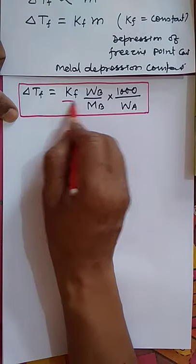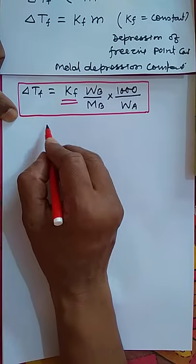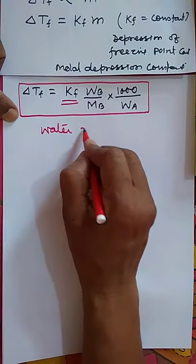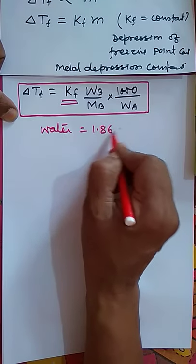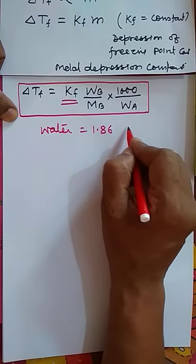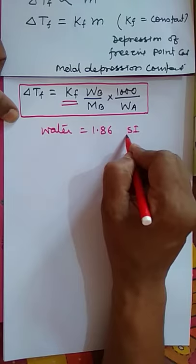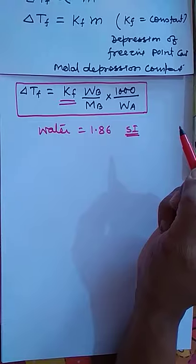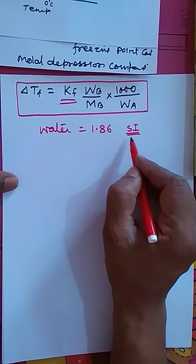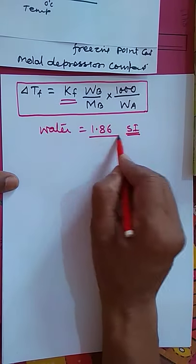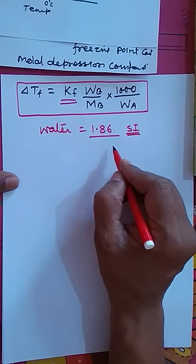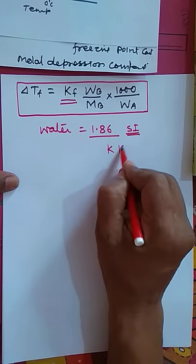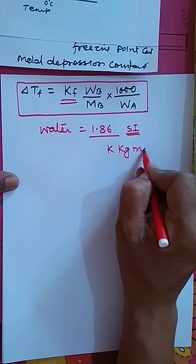The Kf value is given in examinations by the CBSC board. For water, you should remember Kf = 1.86. Keep the unit in mind — it is Kelvin·kg per mole (K·kg/mol).